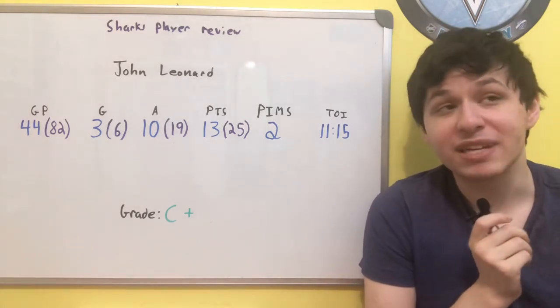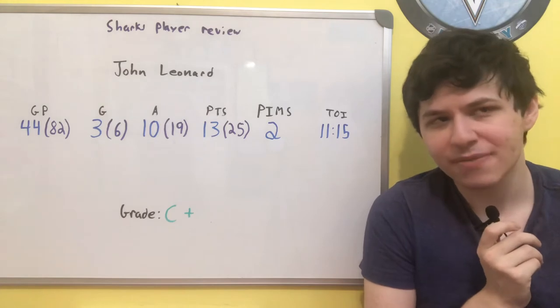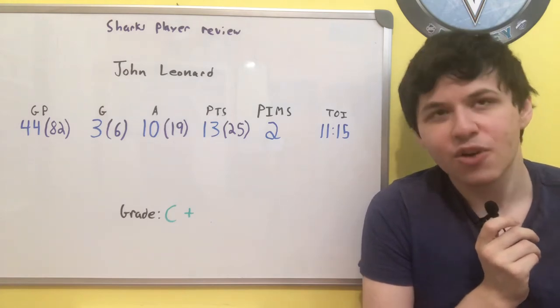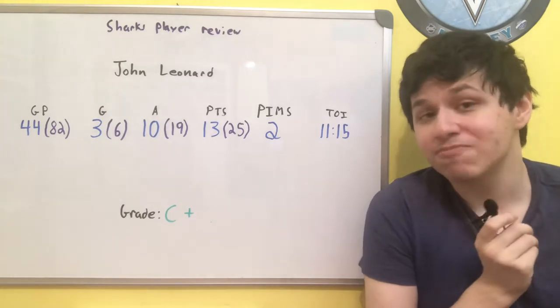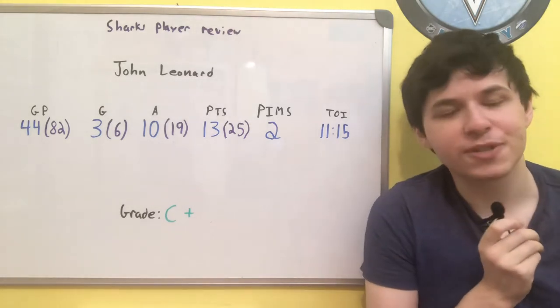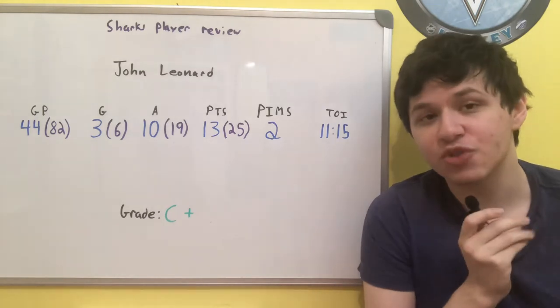And while I said it was for being snakebitten when it came to Ryan Donato, because I felt as though Donato had a pretty good shot, with John Leonard there might be a bit of snakebitten with it, but also, as I said, his shot just wasn't necessarily that great.